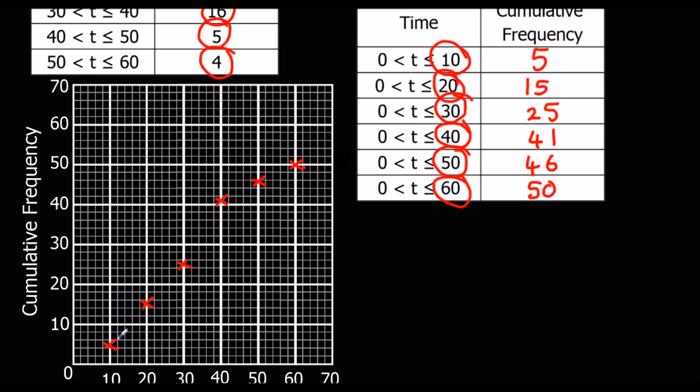And then when we join them up, it should be a smooth curve. So a curve that joins up all these points. So hopefully I won't mess this up. I've missed a point there. But we want to join up the smoothest curve we possibly can.